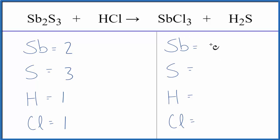On the product side of the reaction, we have 1 Sb, 1 S, 2 Hs, and then 3 of these Cls here.